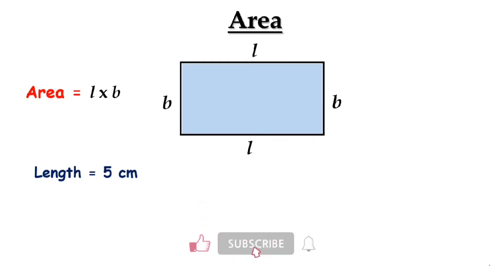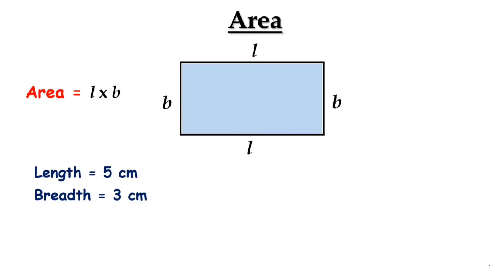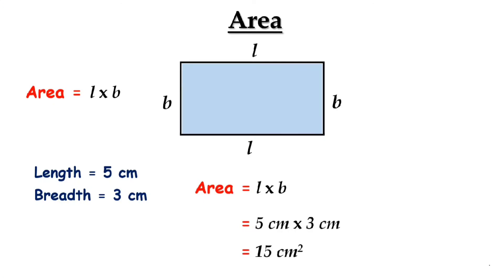Suppose the length of the rectangle is 5 cm and breadth is 3 cm. The area of the rectangle is L into B. Substituting the values, we get 5 cm into 3 cm. 5 into 3 is 15, and cm into cm is cm square. So, the area of a rectangle is 15 square cm.